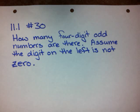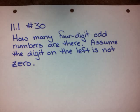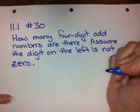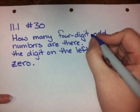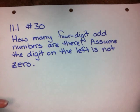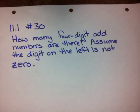Let's take a look at number 30 from 11.1. This one has quite a few different qualifications in it, so we want to make sure we read it carefully and understand exactly what's going on here. So what they're asking is: how many four-digit odd numbers are there? Assume the digit on the left is not a zero.